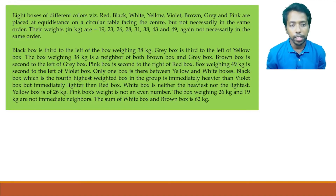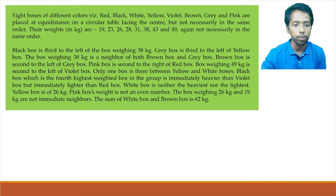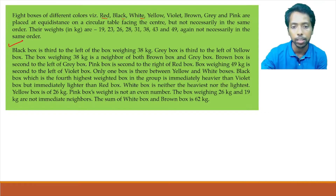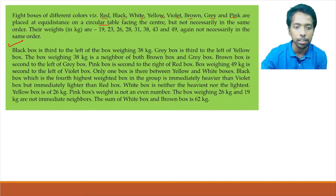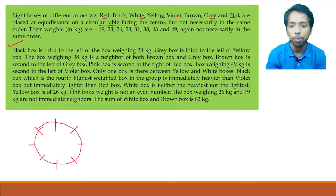Here's the first puzzle: eight boxes of different colors are given and their weights are also given. The actual puzzle starts here — eight boxes are there: red, black, white, yellow, violet, brown, gray, and pink. They are sitting in a circular table facing the center, so this is a circular seating arrangement with eight persons facing the center.